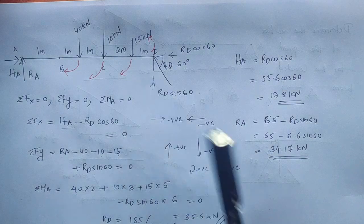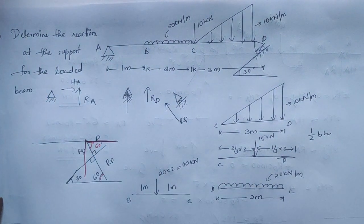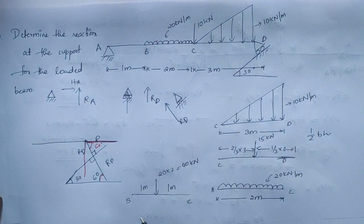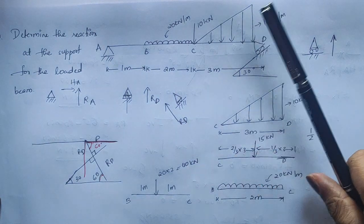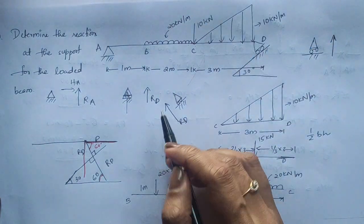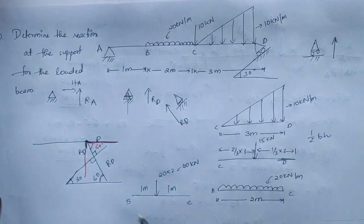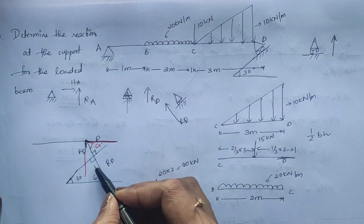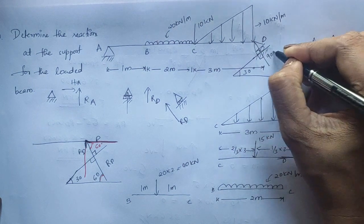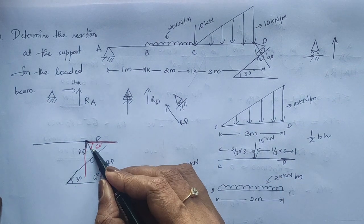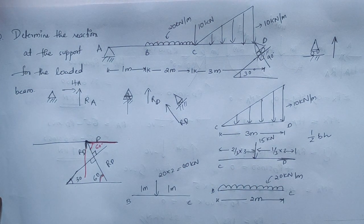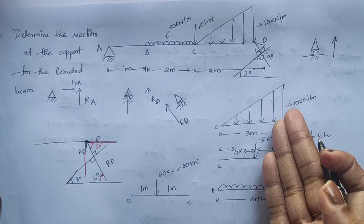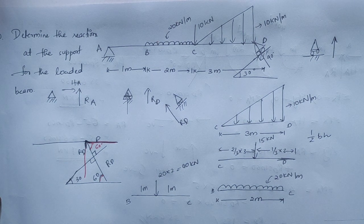The key concept to remember is the inclined roller support. For a normal roller, the reaction is vertical. But when the roller is inclined, the reaction is perpendicular to the inclined surface. With the surface at 30 degrees, the reaction RD makes 60 degrees with the horizontal, allowing us to resolve it into horizontal (RD cos60°) and vertical (RD sin60°) components. Once this is clear, the rest of the problem is straightforward.